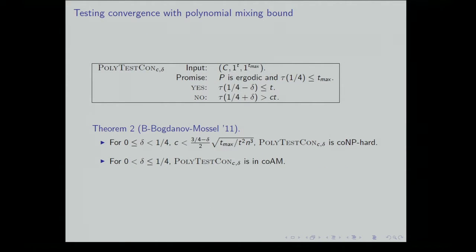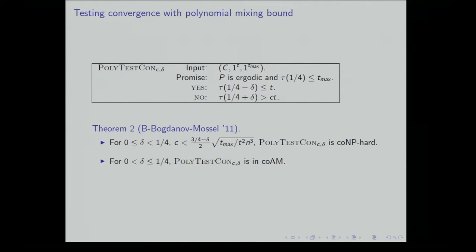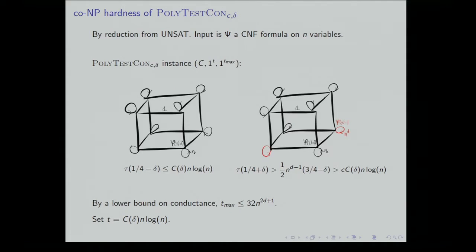The next problem is when we have a bound on the mixing time. In this case, assuming some bound on the stretch in the time you look at, the problem is CoNP-hard. The proof is through a reduction from unsatisfiability. The input is a CNF formula psi; if it doesn't have any satisfying assignments, it's unsatisfiable. The reduction represents the formula using vertices of the Boolean cube. The Markov chain takes weight one on all edges of the cube, and puts self-loops of weight n at unsatisfying assignments and self-loops of weight n^d at satisfying assignments (for some constant d > 1).